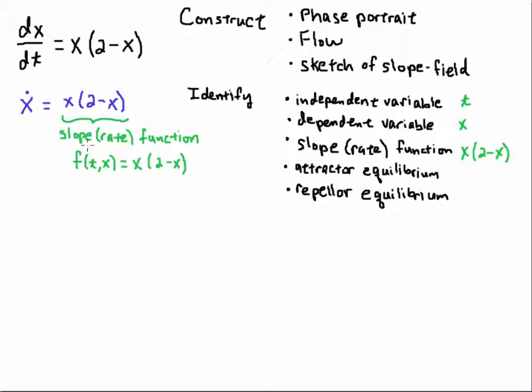The right-hand side here is called the slope function. Sometimes it's called the rate function. I'll refer to it as the slope function. And we can see there that since x is being differentiated with respect to t, as implied by this equation here, the independent variable is t. That's the input variable is t, and the dependent variable is x, and that's x depends on t. So we identified the independent variable as t, the dependent variable is x, and the slope function is x times (2-x).